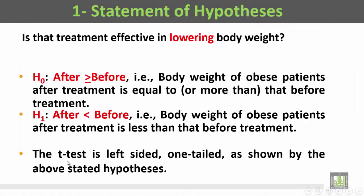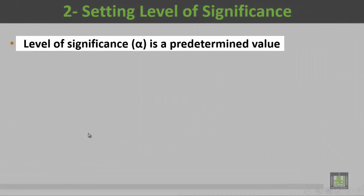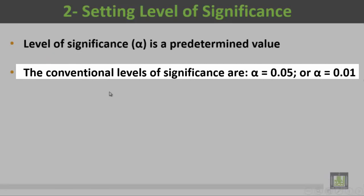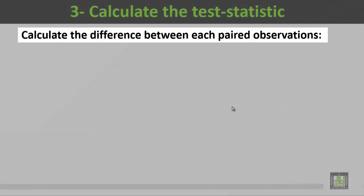So the t-test is left-sided, one-tailed. Then we move to the second step, which is setting the level of significance alpha. The conventional levels are alpha equal to 0.05 and alpha equal to 0.01. In this example, we will consider alpha as 0.05. Then we are going to calculate the test statistic — first calculating the difference between each pair of observations.